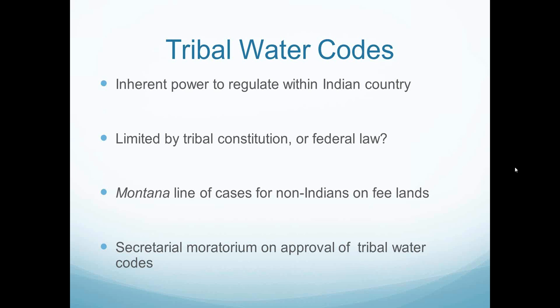Bob responded that he would have to look at each constitution, but generally many IRA constitutions say that if the tribe is going to adopt an ordinance affecting fee property or non-Indians — either in a taxing context or other regulations — the Secretary has to approve those codes. Secretary Babbitt was asked to lift that moratorium and didn't, but he did say that if a tribe has that requirement in its constitution, the department will expedite the process of lifting the requirement of secretarial approval so you don't have to come to the Secretary at all for approval of those sorts of ordinances.